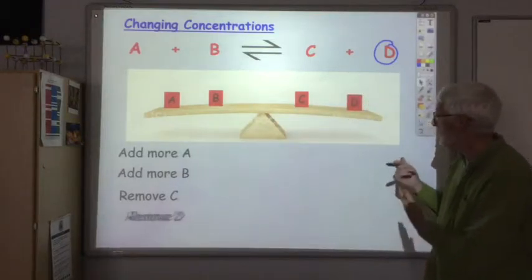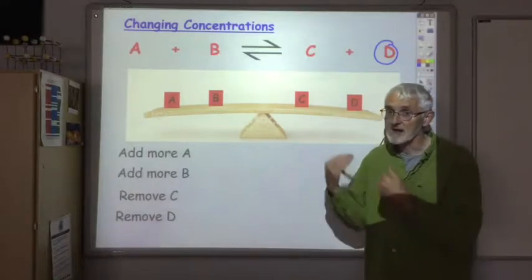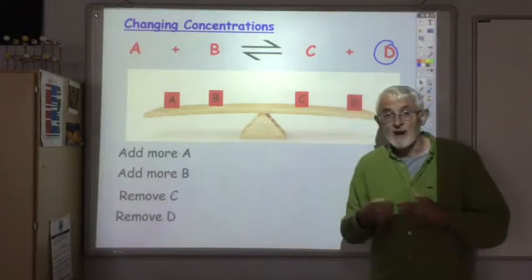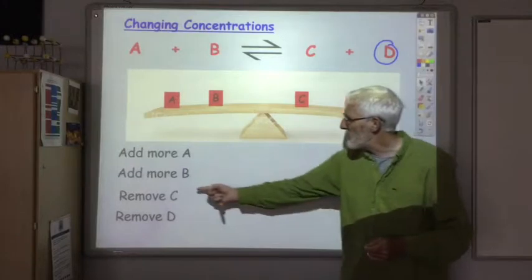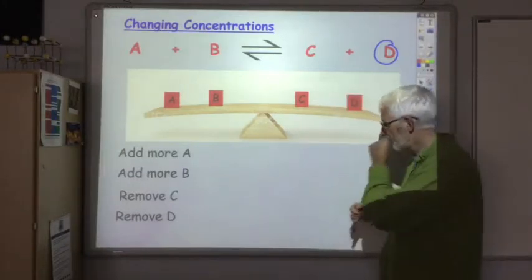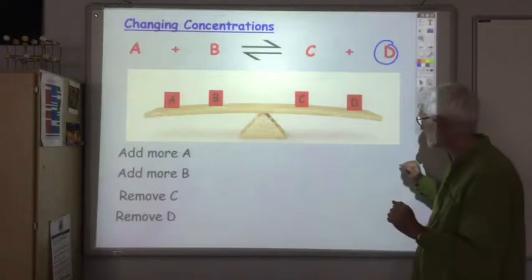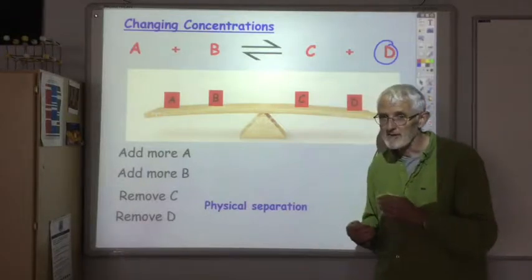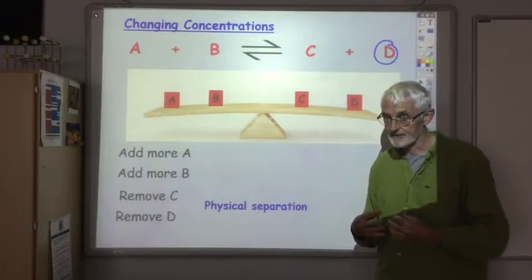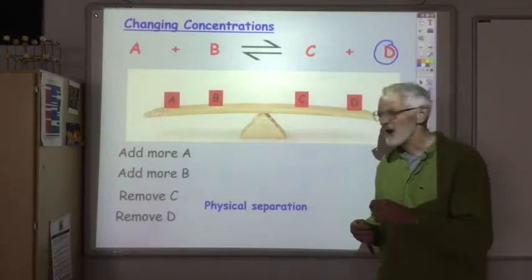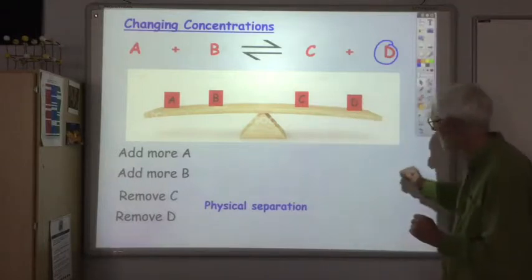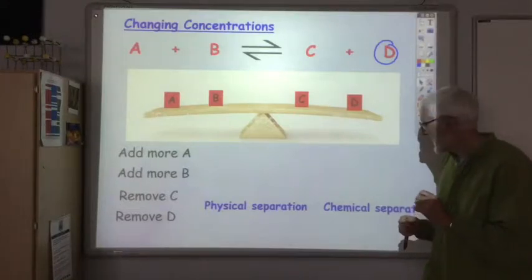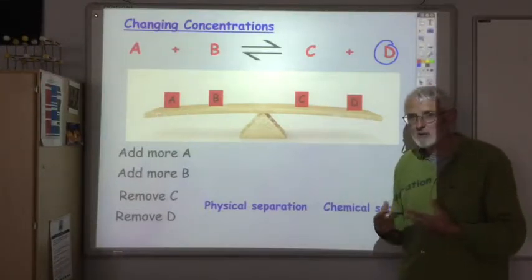And similarly, if we remove some D, some more A and B will react to giving more C and D. Now adding more A and adding more B are very straightforward. Just pour in some more. But how would you remove C or D? That's a bit more tricky. Now there's two possible ways we can do it. We can do it by a physical separation. Most normally this would be by removing a gas by liquefying it. And we'll cover that later on when we look at the Haber process in a bit more detail. Or we could remove it by chemical separation. And there's a couple of ways we can do a chemical separation. I want to look at them now.